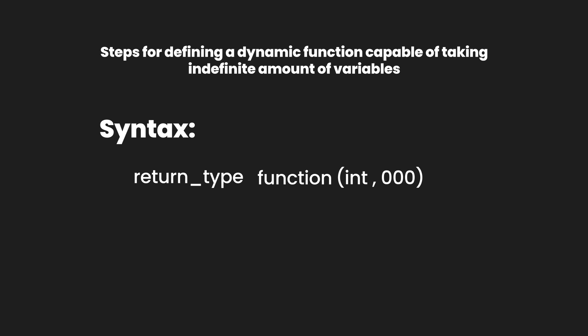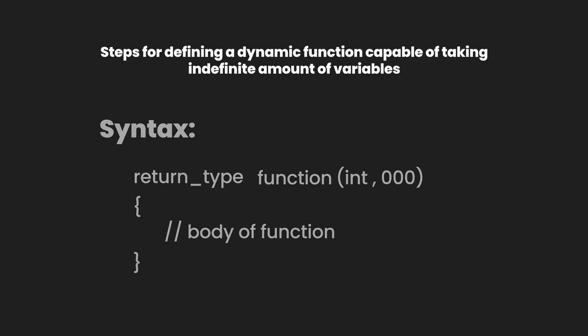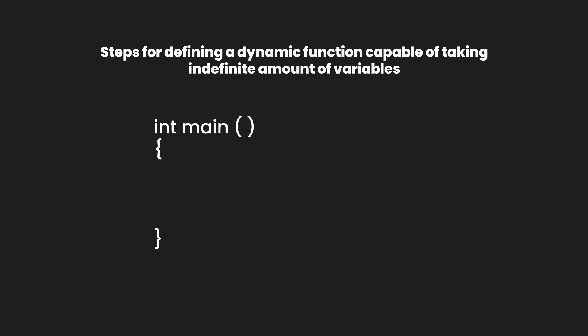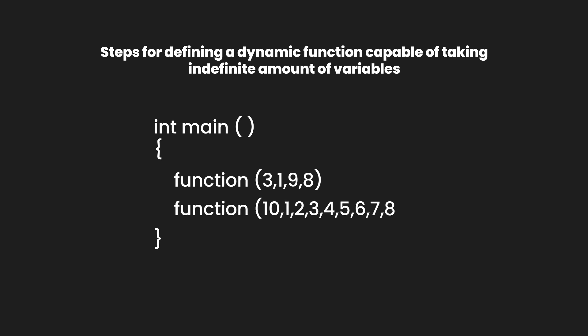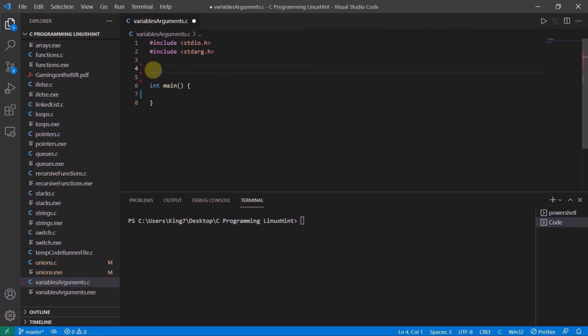This tells the compiler that this function is going to take an indefinite number of variables defined by that integer value. For the function call — suppose you've written a function to add integer values and you want to add three values — the call would look like: function(3, 1, 9, 8). If you want to add ten values from the same function, the call would be function(10, ...) followed by the ten integer values.